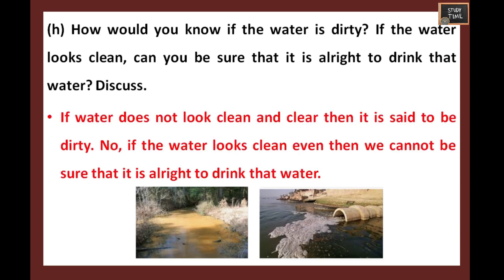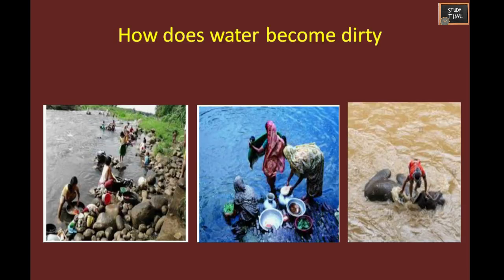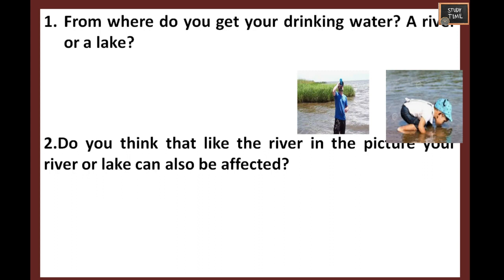What happens when there is a flood? All the houses, roads, and fields get covered by water. It becomes very difficult for people to survive in such places. Have you seen dirty water in a river or pond? How would you know if the water is dirty? If the water does not look clean it will appear dirty. But even if the water looks clean, we cannot be sure it is all right to drink — you cannot judge whether water is pure just by seeing it. How does water become dirty? People washing clothes, bathing animals, and cleaning utensils in the river make the water dirty. The water in the river kept changing as it flowed through various places. Water in ponds and lakes also becomes dirty due to similar reasons.